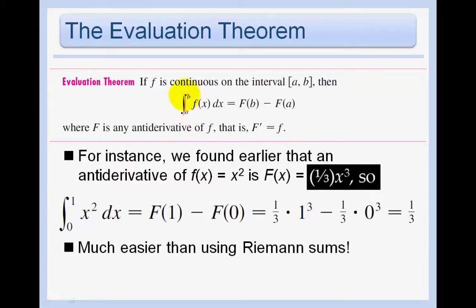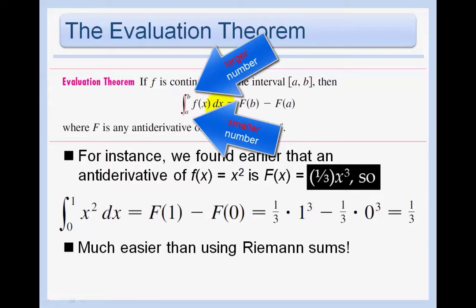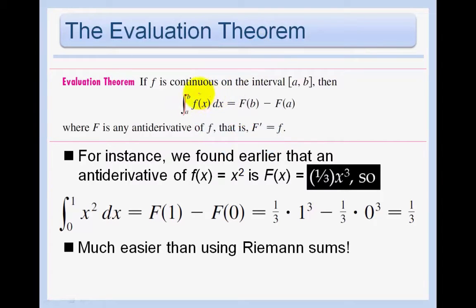So we read this as the integral from a to b, and we always put the smaller number on the bottom, the integral from a to b of f(x) dx. So we're taking the antiderivative of f(x). And we define that as big F(b) minus big F(a).